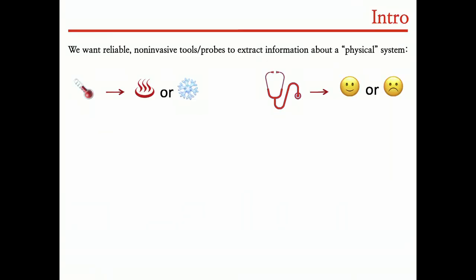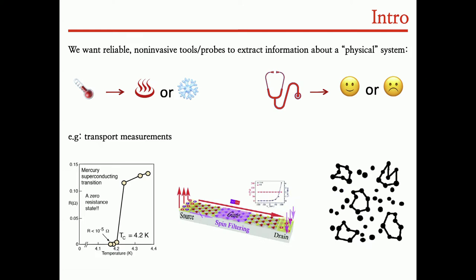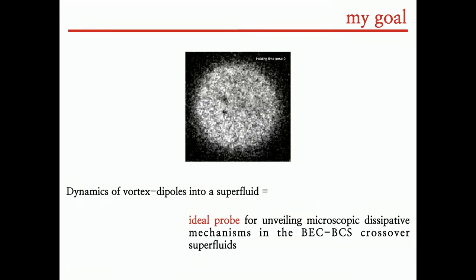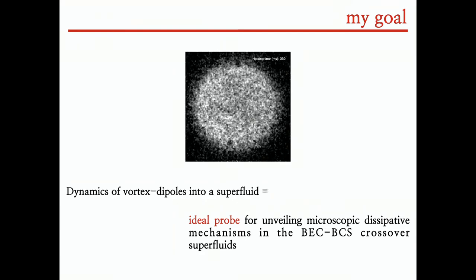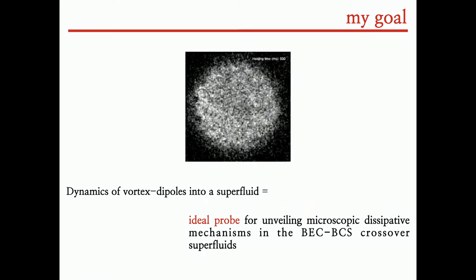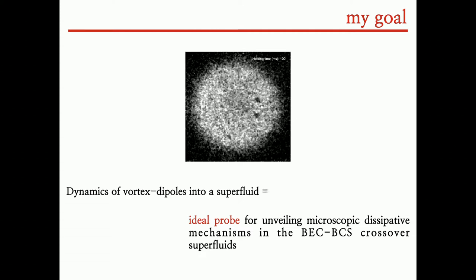First, I'd like to start with some basic introduction. Typically we like to find probes or tools that are the least invasive possible to extract and unveil properties of a system. This is true in the case of ultra-cold systems or in general in physics, for example considering transport measurements. You have different examples from superconducting transitions to Anderson transitions and spin dynamics. My goal is to convince you that the study of dipole propagation, of single vortex dipole propagation in a superfluid, is an ideal probe to extract microscopic dissipative mechanisms across the whole BEC-BCS crossover.